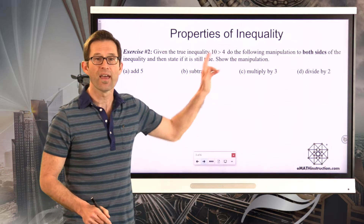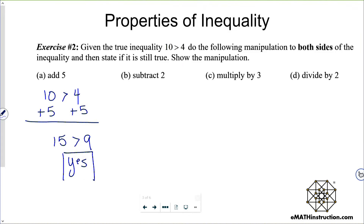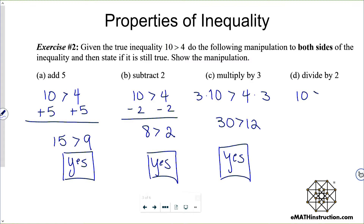I've got 10 is greater than 4. If I add 5 to both sides, I get 15 is greater than 9 — yes, still true. Subtracting 2 from both sides gives 8 is greater than 2 — still true. Multiplying both sides by 3 gives 30 is greater than 12 — still true. And dividing both sides by 2 gives 5 is greater than 2 — yes, still true.